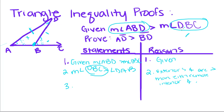Since the measure of angle ABD is greater than the measure of angle DBC, and angle DBC is greater than angle DAB, we're going to use the transitive property to say that the measure of angle ABD is greater than the measure of angle DAB.